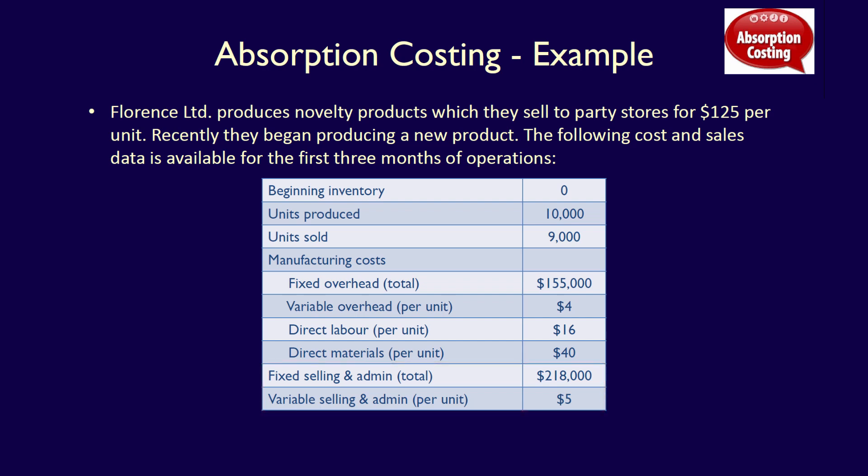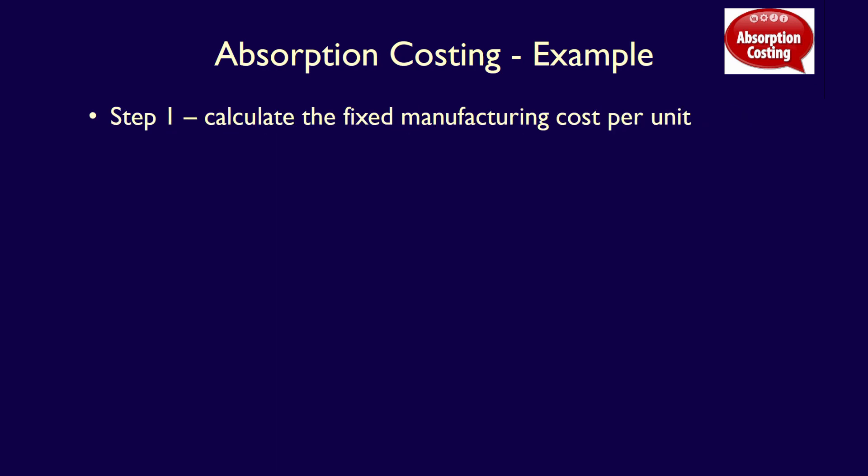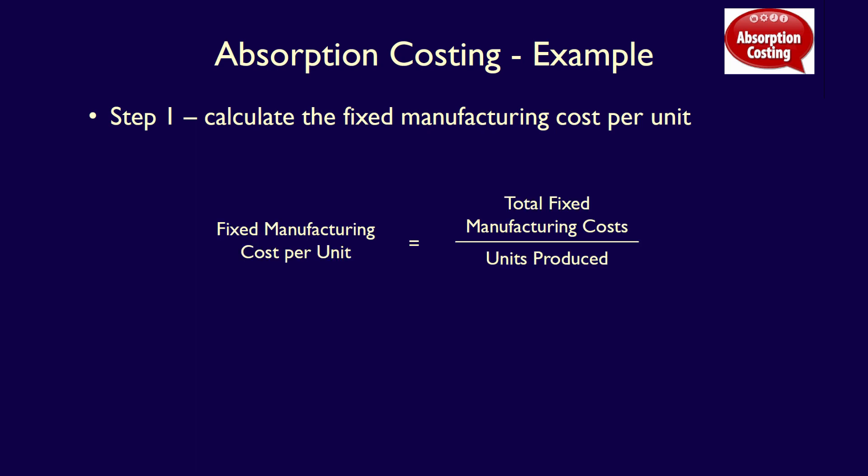Assuming the company uses absorption costing, prepare an absorption costing income statement for the first quarter, January 1st through to March 31st. Because under absorption costing we have to add the fixed manufacturing costs into the cost of the product, Step 1 is to calculate the fixed manufacturing costs per unit. This is calculated as the total fixed manufacturing overhead divided by the number of units produced — note that this formula uses units produced, never units sold. For Florence Limited, the fixed manufacturing cost per unit is $155,000 divided by 10,000 units, which equals $15.50 per unit. This is the amount of fixed manufacturing overhead that each unit of the product would have to absorb — hence the name absorption costing.